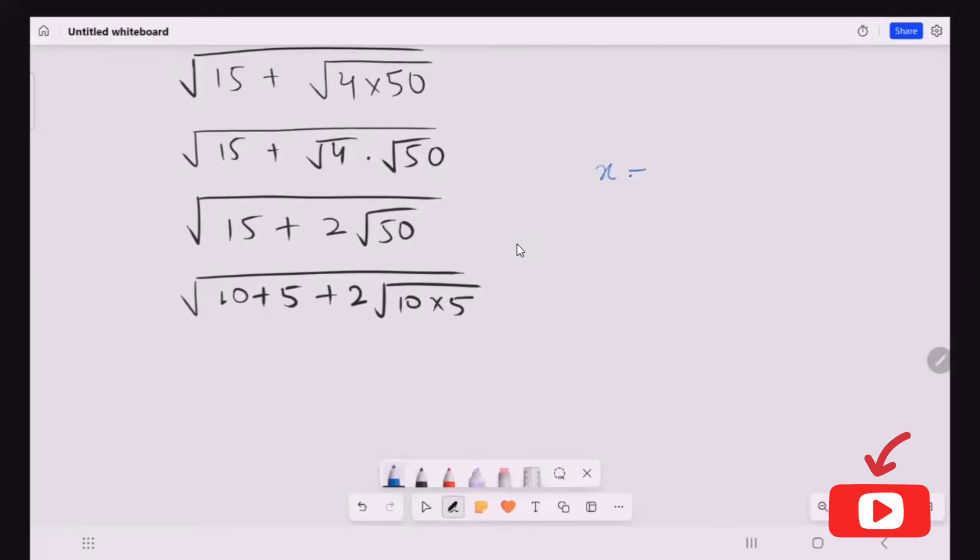X is equals to radical 10, and x squared is equals to 10. Y is equals to radical 5, and y squared is equals to 5.